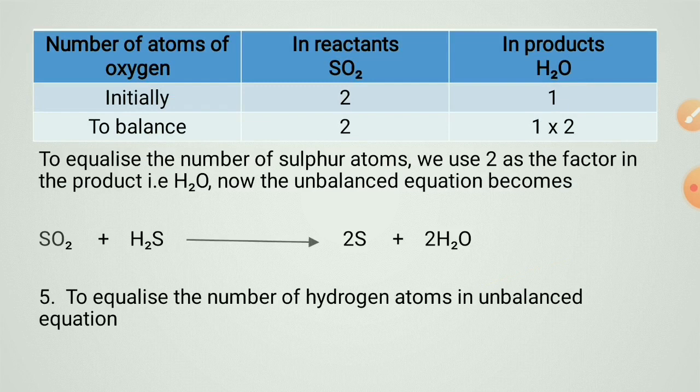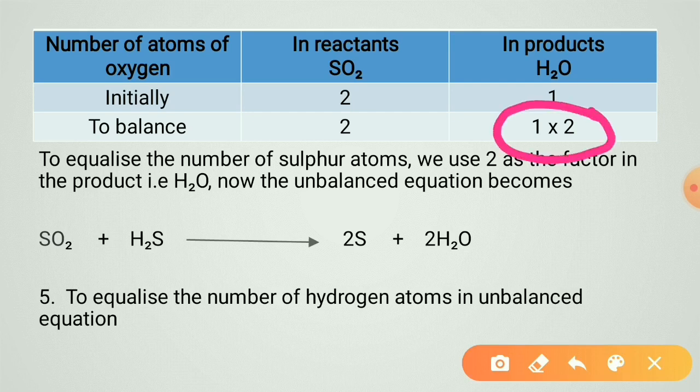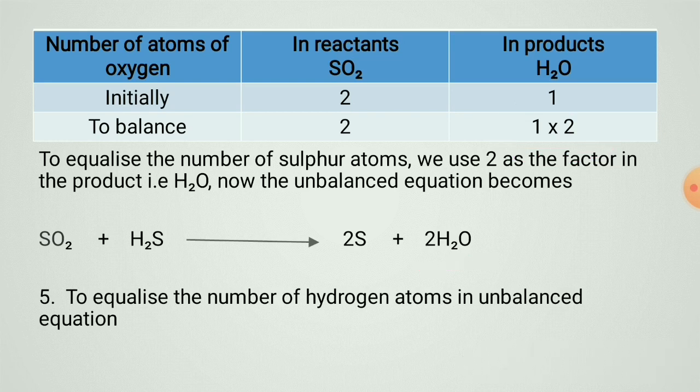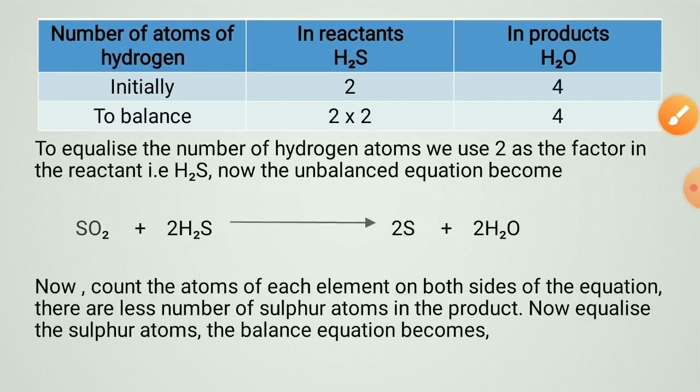For SO₂ on the reactant side and H₂O on the product side, multiply H₂O by two to balance oxygen. Now oxygen is balanced. However, the number of hydrogen atoms is still unbalanced in the equation, so hydrogen must be balanced next.